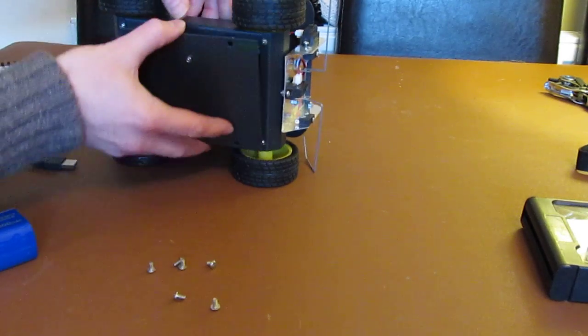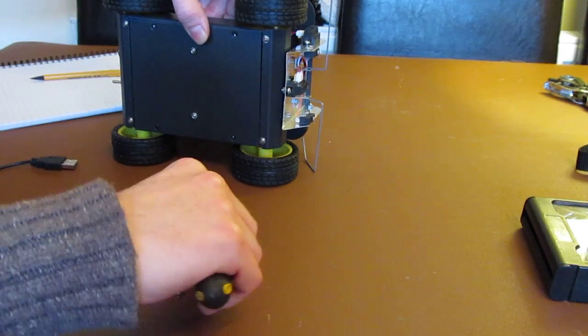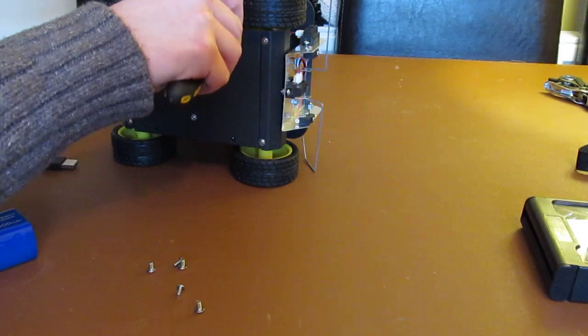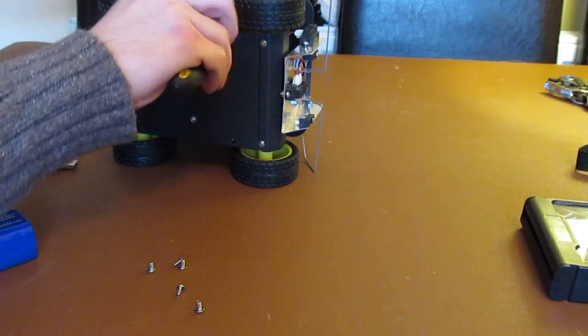I've put the plate back on. The DF-robot buggy base, current price, which is at the beginning of 2013, I've seen on eBay for £35.